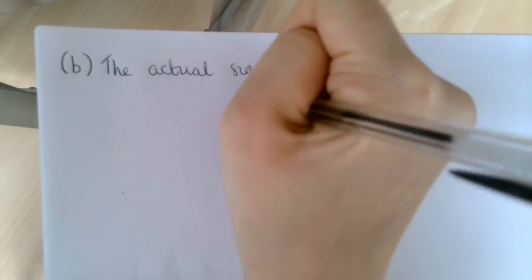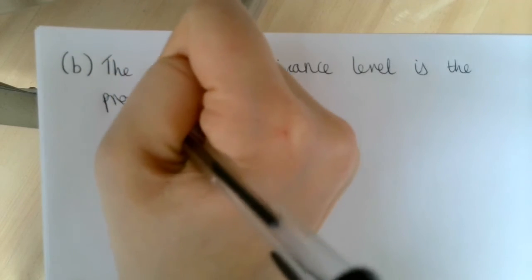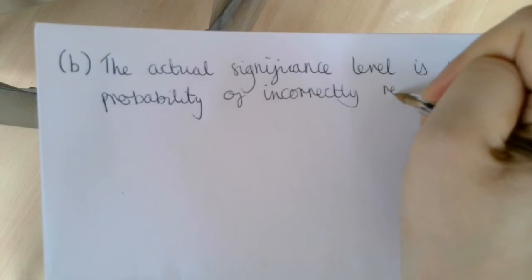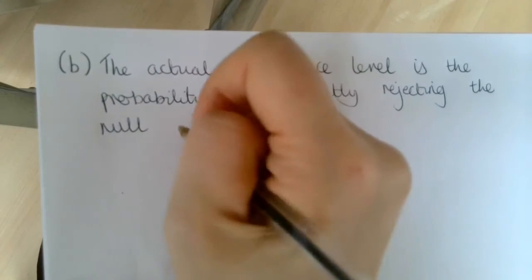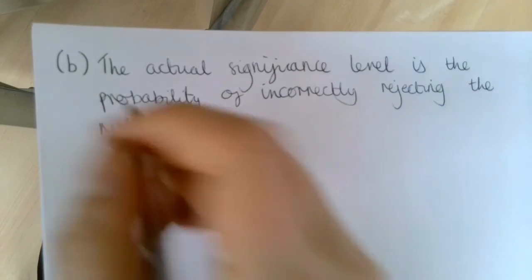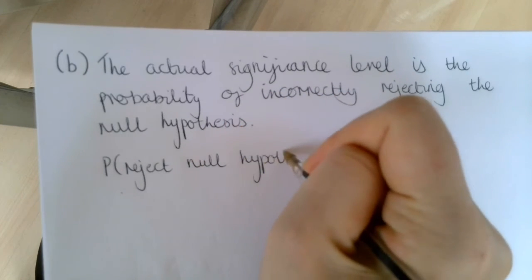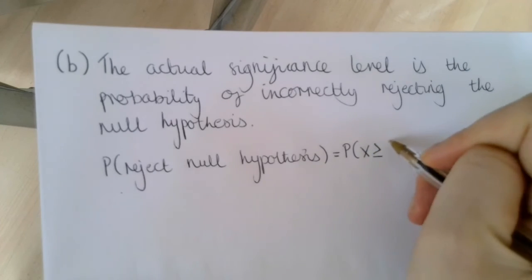Part B of this question asks us to work out the actual significance level of this test. The actual significance level is the probability of incorrectly rejecting the null hypothesis. So we need to work out this probability — the probability that we reject the null hypothesis — which is the probability that x is greater than or equal to 5.